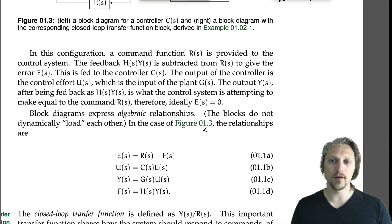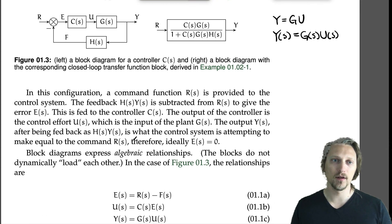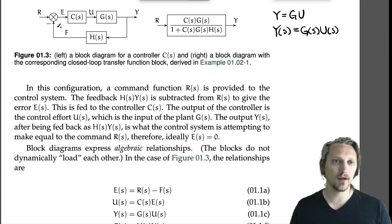In the case of Figure 1.3, the relationships are: the error is the output of the summing junction, it's equal to R minus F. That's what a summing junction does, it either adds or subtracts values. Then we have three blocks that we can consider as expressing an equation: the C, G, and H blocks. The C block says that the output of the controller U is equal to C, the transfer function, times E. So U equals CE.